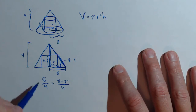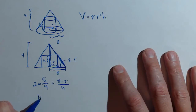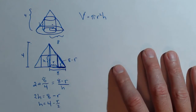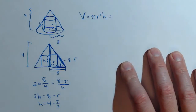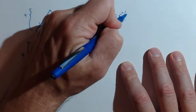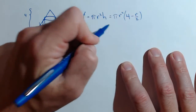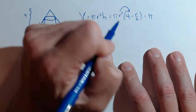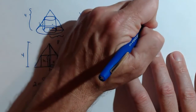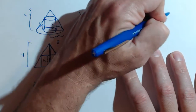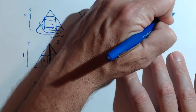The height of the small triangle, based on our diagram, is just h. We can solve for h: this ratio equals 2, so 2h equals 8 minus r, or h equals 4 minus r over 2. This allows us to get the volume of our cylinder in terms of one variable, because V becomes π r squared times (4 minus r over 2). Multiplying that out and leaving π out front: V = π(4r squared minus r cubed over 2).